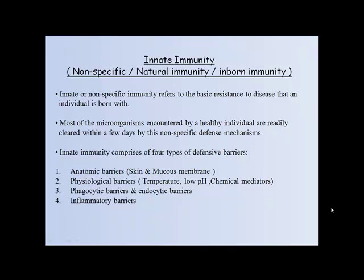Innate immunity comprises four types of defensive barriers: first, anatomic barriers; second, physiological barriers; third, phagocytic and endocytic barriers; and fourth, inflammatory barriers.